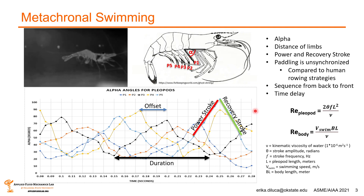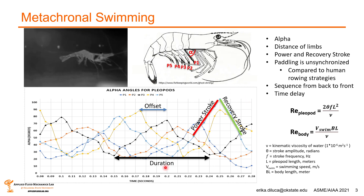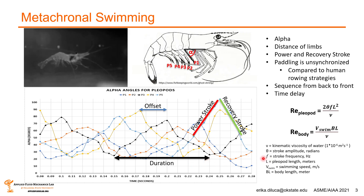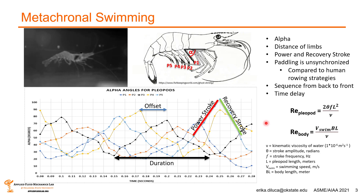We took this data and calculated the Reynolds number of a pleopod and of the body. The Reynolds number of a pleopod is: 2 times the stroke amplitude (high alpha minus low alpha, in radians) times stroke frequency (1 over the cycle duration) times the pleopod length squared, all divided by the kinematic viscosity of water. The body Reynolds number is swimming speed times body length divided by the kinematic viscosity of water.